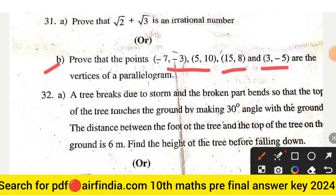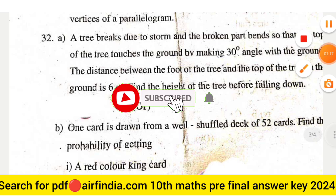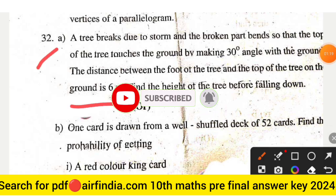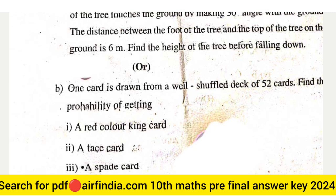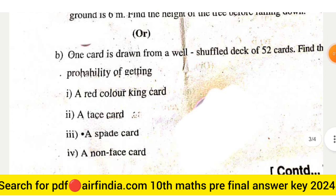Question 32: A tree is broken due to storm and the broken part bends so the top of the tree touches the ground by making 30° angle with the ground. The distance between the foot of the tree and the top of the tree on the ground is 6 meter. Find the height of the tree before falling down.